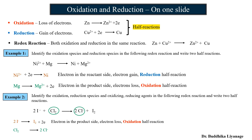Next, Cl₂ is on the reactant side and Cl⁻ is on the product side. We add a coefficient of 2 to balance the number of atoms. Focusing on charge: Cl₂ in elemental form has zero charge, but Cl⁻ has a minus one charge. Zero goes to minus one by gaining electrons, so this is the reduction half reaction.